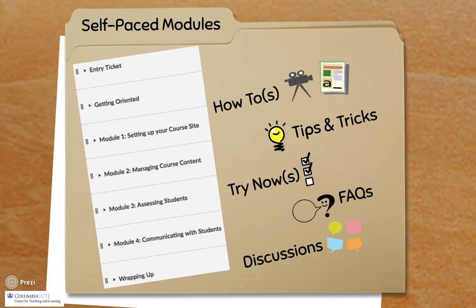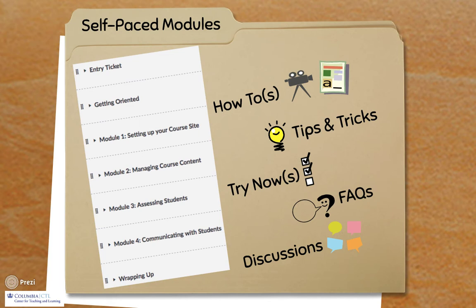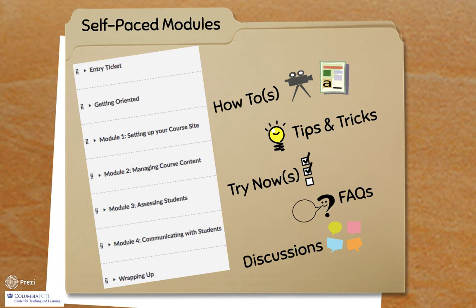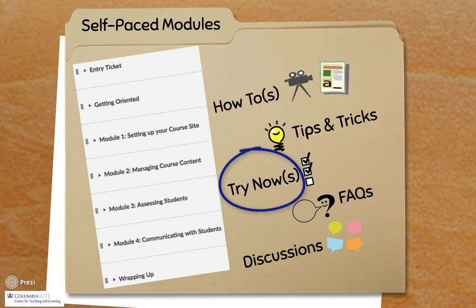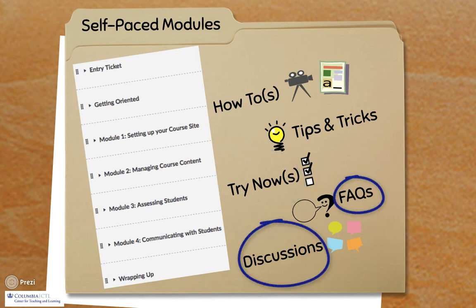This self-paced course is divided into four modules. You can select the content you want at the time that works best for you. The entry ticket can help you decide which modules to go for based on your experience in Canvas and your course needs. Each module includes how-to videos and step-by-step guidelines to use a specific tool or perform a task in Canvas. It also includes tips you can leverage and opportunities to try out the tools and engage with your peers through discussions and FAQs.